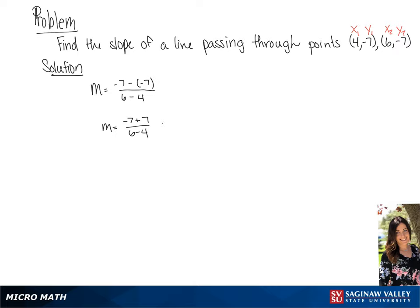This will give us 0 over 2, which is going to equal 0. So our slope is going to be 0, which means this is going to be a horizontal line.